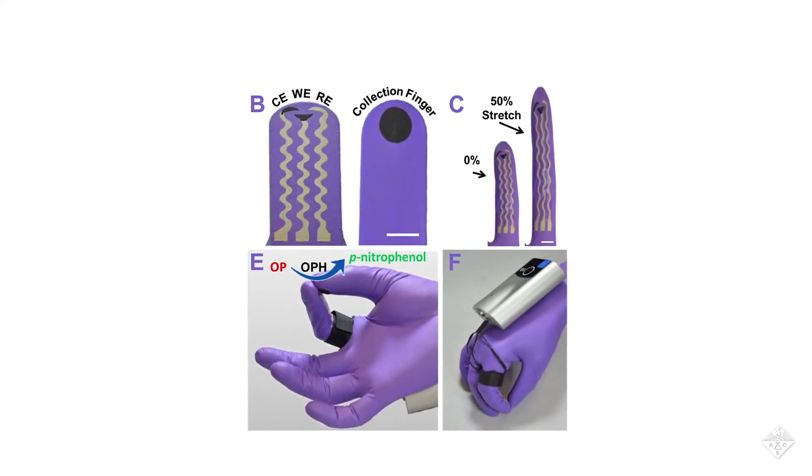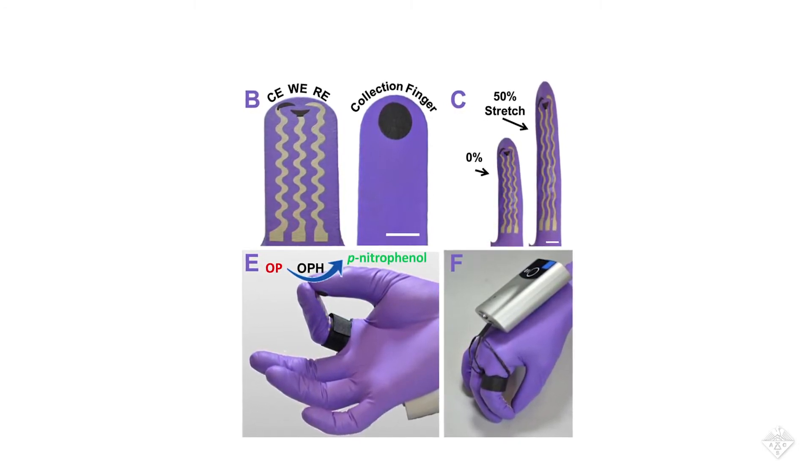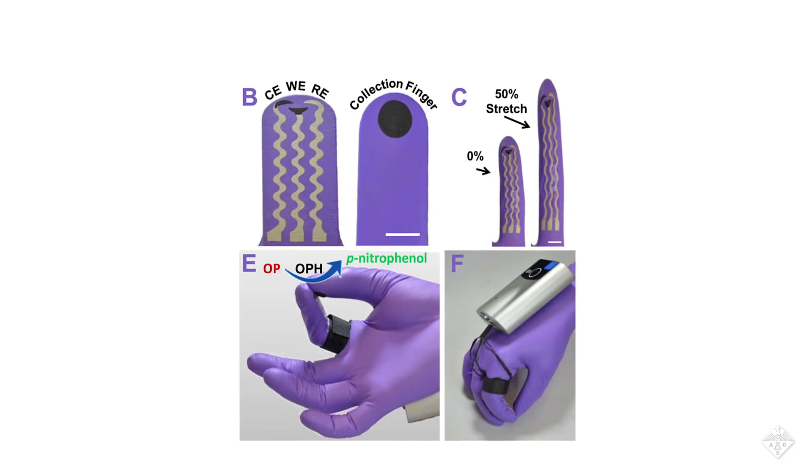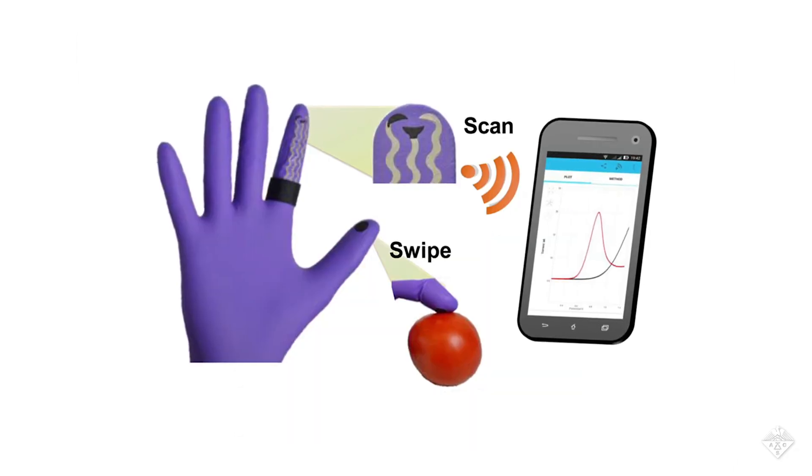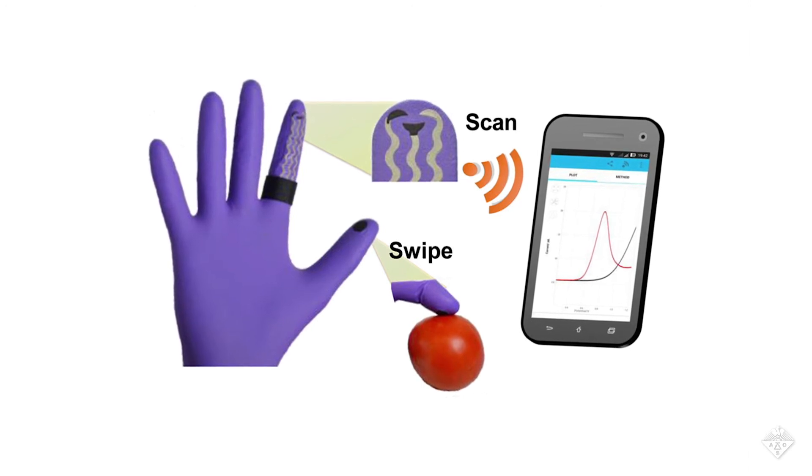The sensor's enzyme reacts with any organophosphate in the sample, creating an electrochemical signal that's detected by the glove's printed electronics. The electrical data are sent via a reusable Bluetooth device on the back of the glove to a user's mobile device.